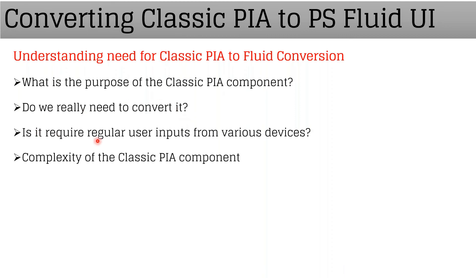Is regular user input from various devices required? That is another criteria. We also need to understand the complexity of that particular classic page we want to convert. Based on all these pointers, we need to come up with a reason and understanding for why we need to convert it — because once you commit, it will require some investment and resource allocation to get it done.